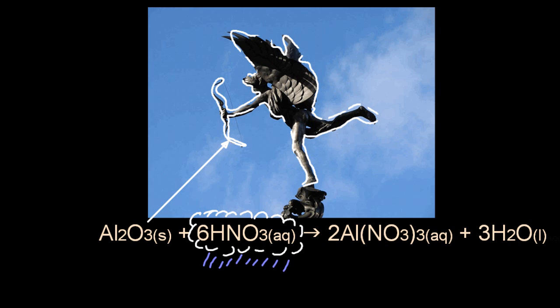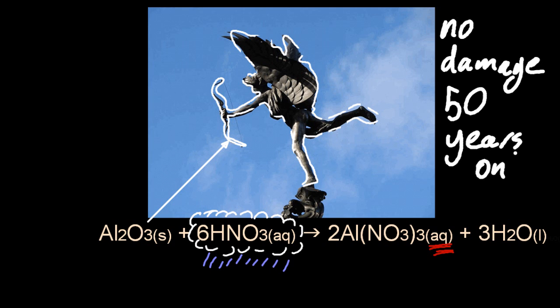Aluminum is then susceptible—makes aluminum nitrate and water. Now I'm not convinced this is true, because this statue wasn't cleaned for 50 years and when they did, there was no sign of acid corrosion. I've never heard of aluminum statues being susceptible to acid rain.